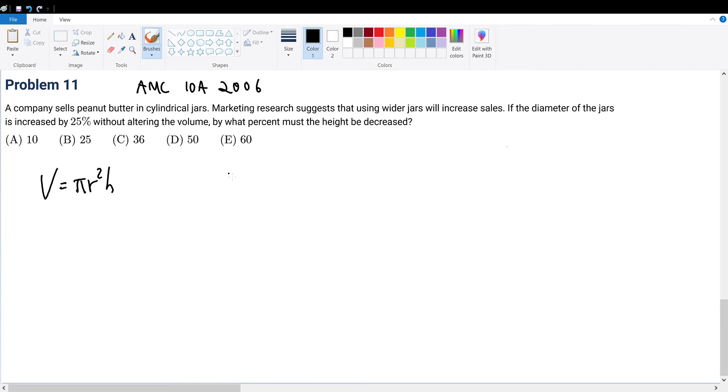We're going to let the diameter of this cylindrical jar be d. The diameter is increased by 25%, so we add 0.25d, which gives us 1.25d. This is the diameter of the new jar.